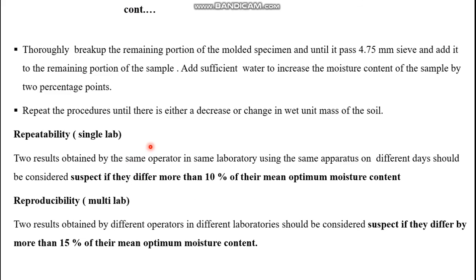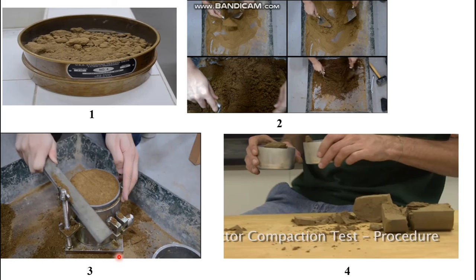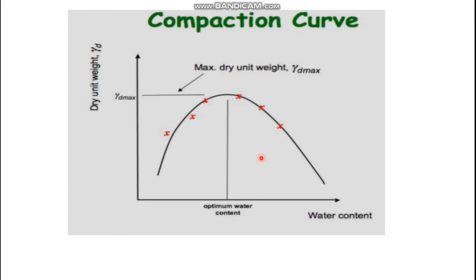Regarding precision of results: if the Standard Proctor test is conducted within a single laboratory, the optimum moisture content values should not differ by more than 10%. If conducted in different laboratories, values should not deviate by more than 15%. The results produce a bell-shaped compaction curve with water content on the x-axis and dry density on the y-axis. The peak of this curve represents maximum dry density, and the corresponding water content is the optimum water content.